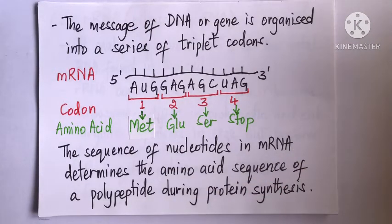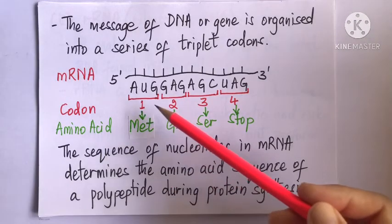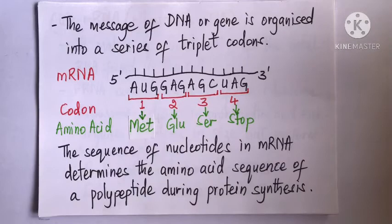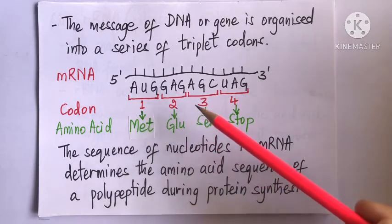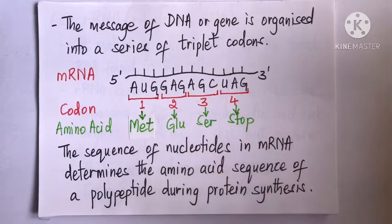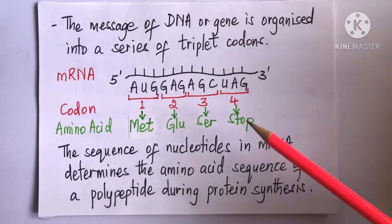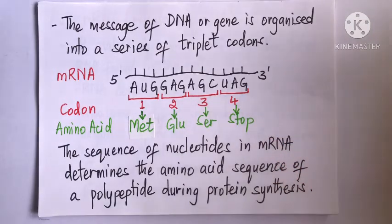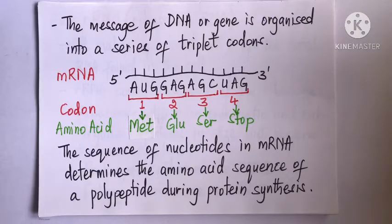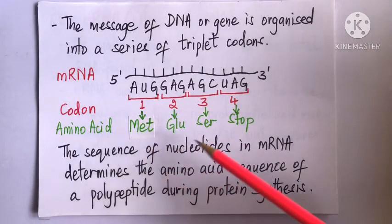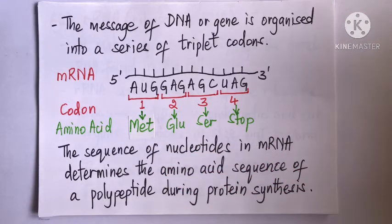Based on the sequence of this mRNA strand, the first codon, AUG, specifies for methionine. The second codon, GAG, specifies for glutamate or glutamic acid. The third codon, AGC, specifies for serine. While the fourth codon, UAG, does not code for any amino acid but is a stop codon. In short, the sequence of nucleotides in the mRNA dictates the sequence of amino acids in a polypeptide during protein synthesis.